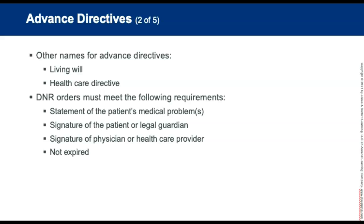An advanced directive is a written document specifying medical treatment for a competent patient should he or she become unable to make decisions, most commonly used when the patient becomes comatose. It is often referred to as a living will or healthcare directive. A valid DNR order must have a clear statement of the patient's medical problem, a signature of the patient or legal guardian, and a signature of one or more physicians or other licensed healthcare providers. A DNR order with an expiration date must be dated within the preceding 12 months to be valid.